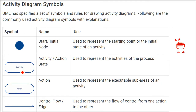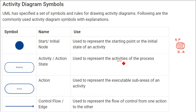Then we have the activity — since this is an activity diagram, we have an activity symbol. This is a round-cornered rectangle, and it is used to represent the activities of the process.